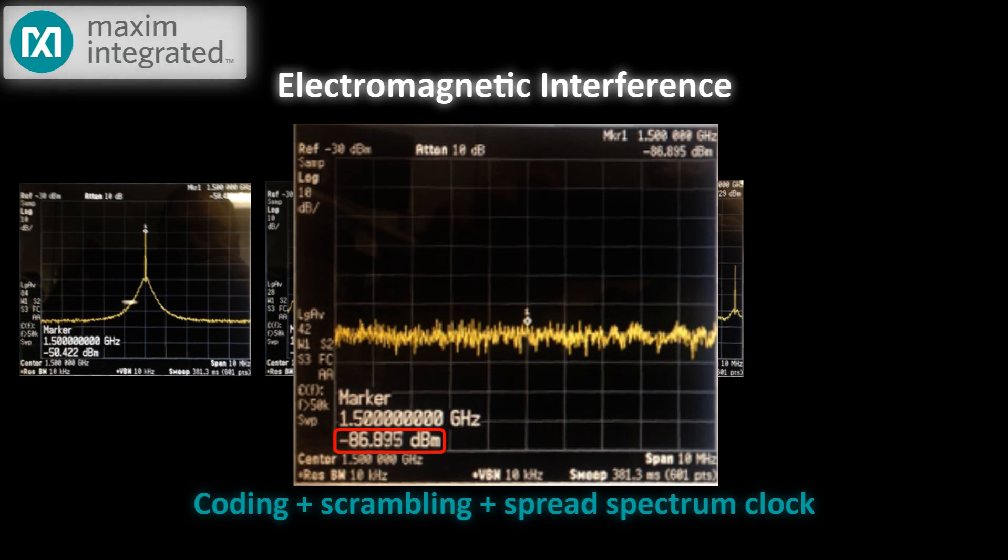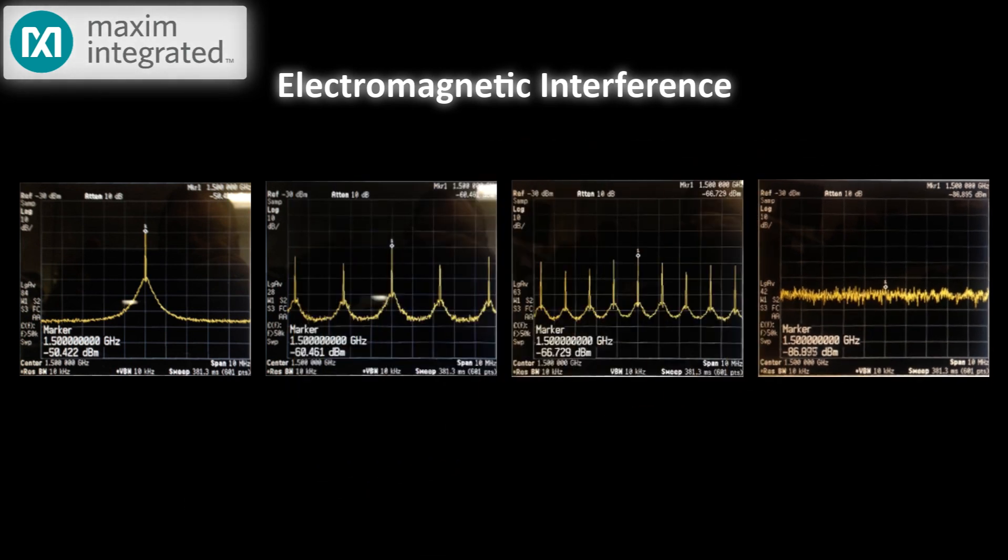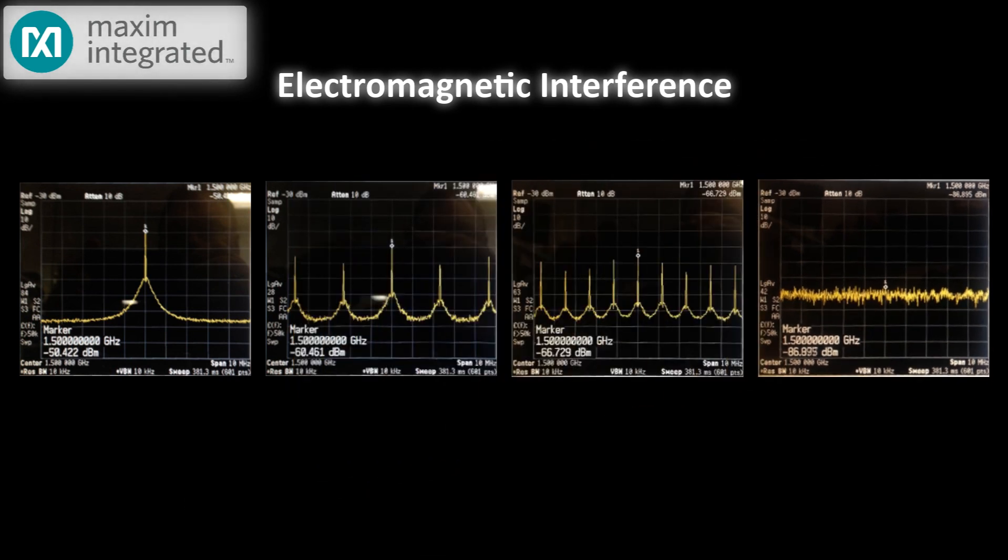But look at what happened to the noise floor. Instead of being down about minus 105 dBm, it's now about minus 90 or so dBm. In other words, we've massively reduced our peak levels, but at the expense of pretty significantly raising the apparent noise floor. In most applications, this is a worthwhile trade-off. Regulatory bodies just want the radiated emissions to fit under a mask. As long as the peaks are under the mask, they're happy. And broadband noise is easier to manage in most communication systems than an interfering signal at a particular frequency.